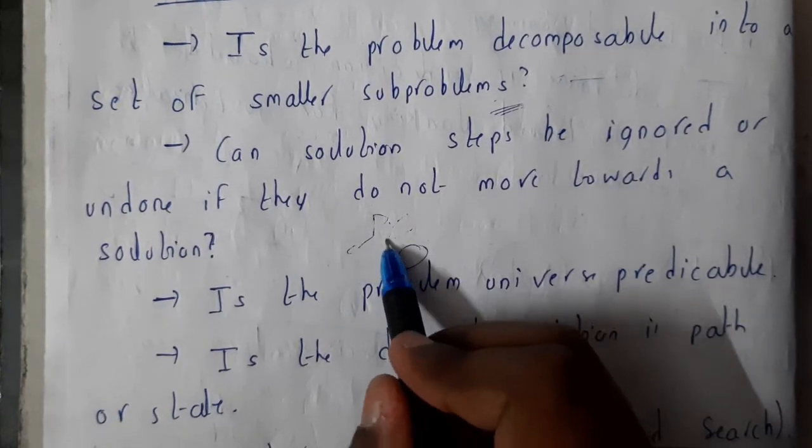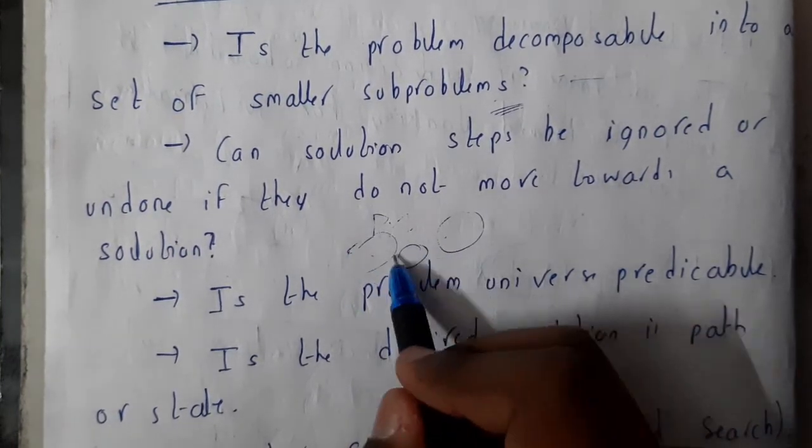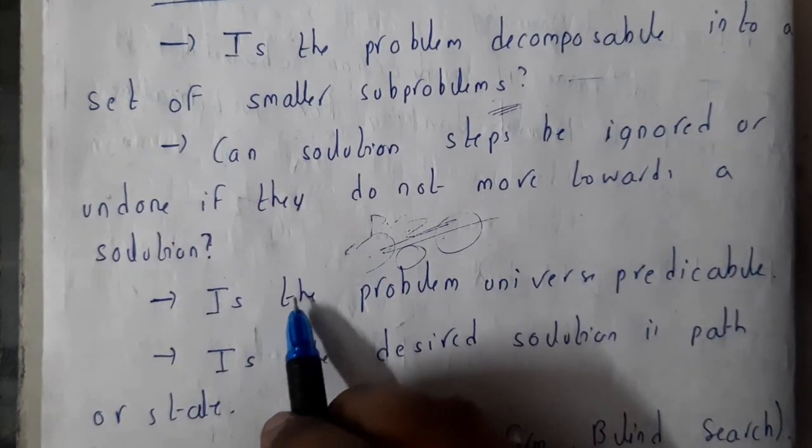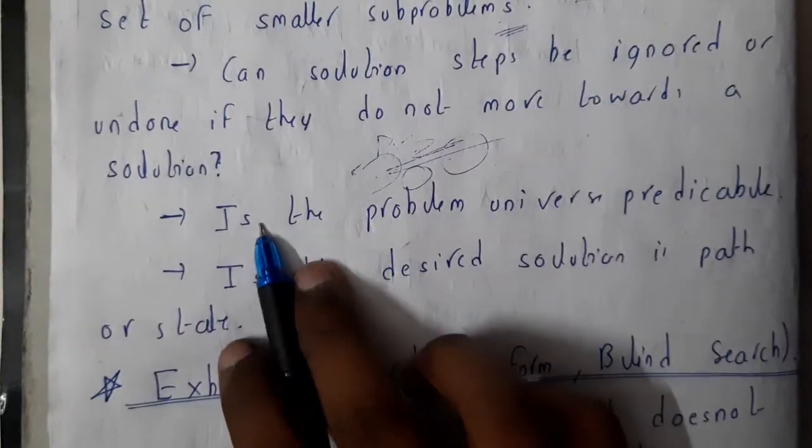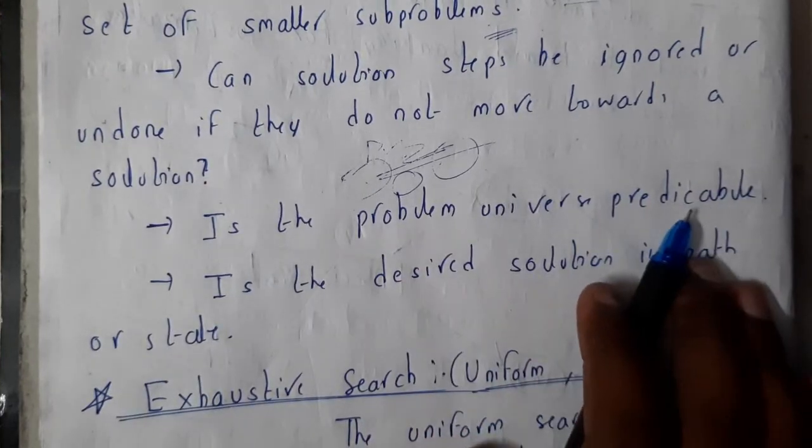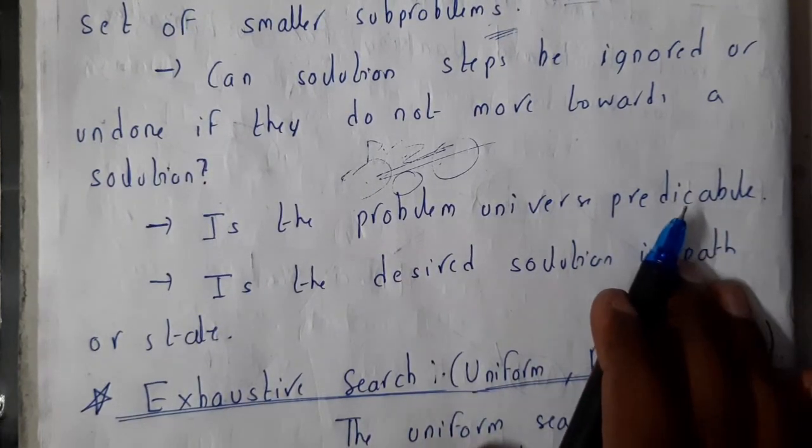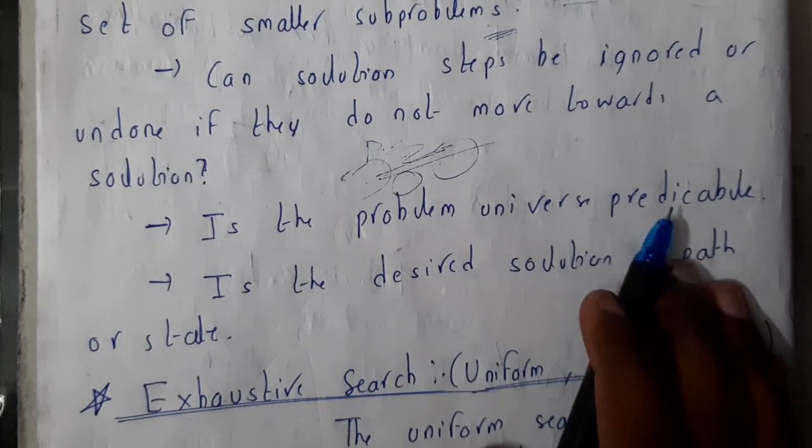So only among them only one path will be right. Is there need to store all the unwanted paths? You need to undo them, that will be better. Is the problem universally predictable? So you can write, say the answer perfectly or accept exactly as your friends say.